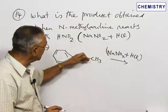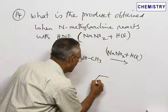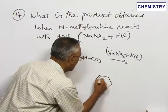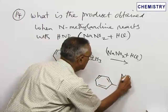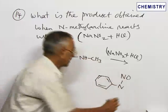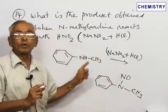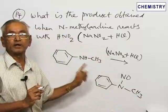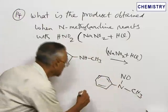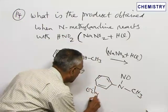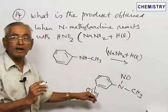Therefore, the nitrous acid formed will displace the hydrogen to produce N-nitroso-N-methyl aniline. The hydrogen has been removed and substituted by means of a nitroso group. Therefore, an aromatic secondary amine always produces an N-nitroso derivative, which is an oily substance. In the earlier case it was a green flakes-like substance, whereas this is an oily substance.